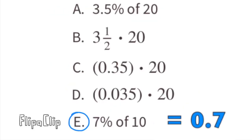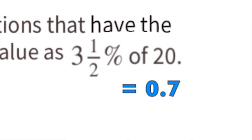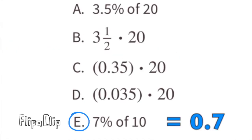Option E: 7 percent of 10. Seven percent of 10 is 0.7, and three and a half percent of 20 is also 0.7. So I would select E.